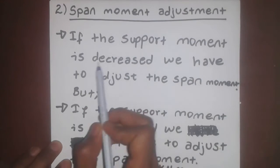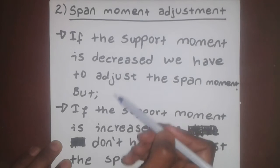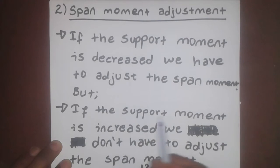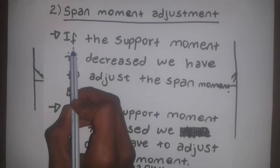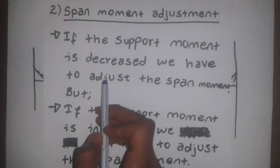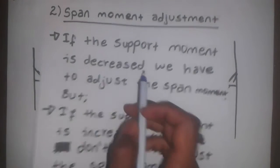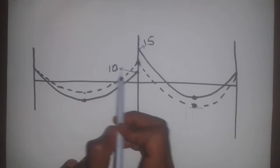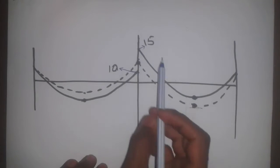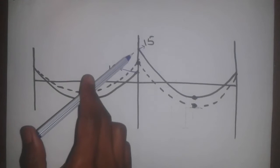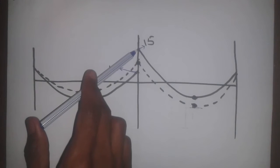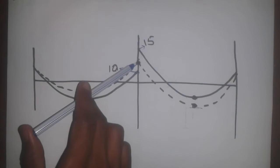If the support moment is decreased, we have to adjust the span moment. If the support moment is decreased, we don't have to adjust the span moment. If the support moment is decreased, we have to adjust the span moment.